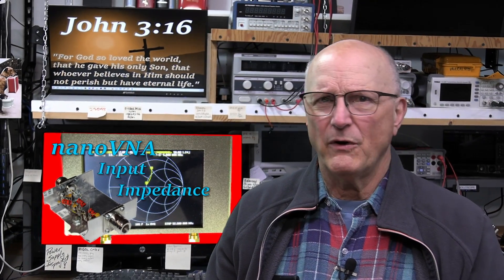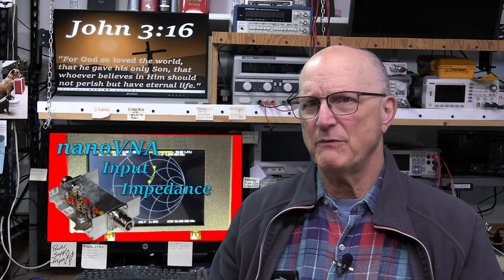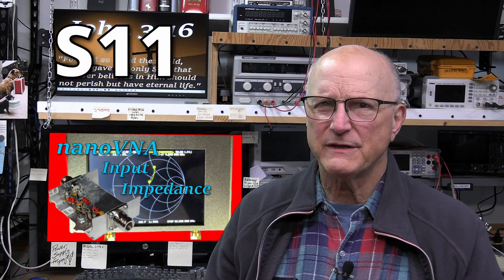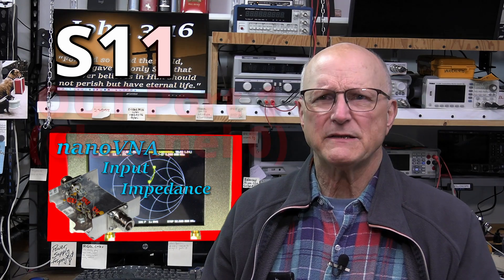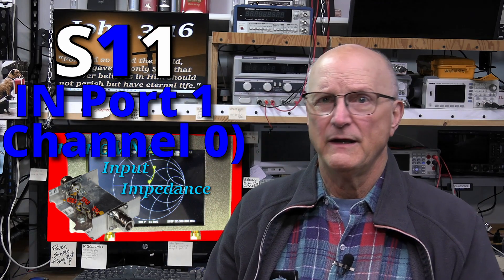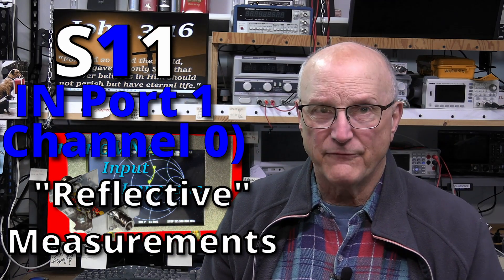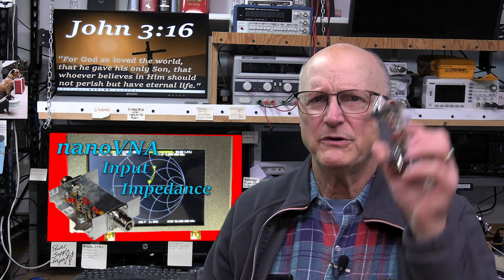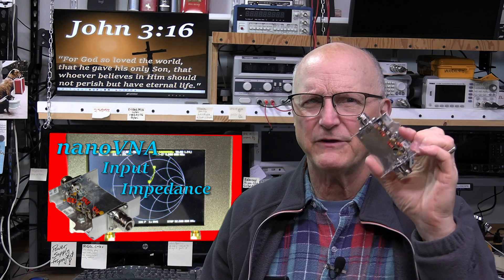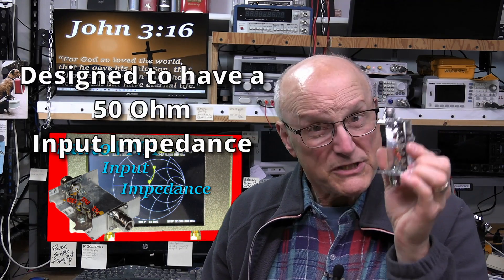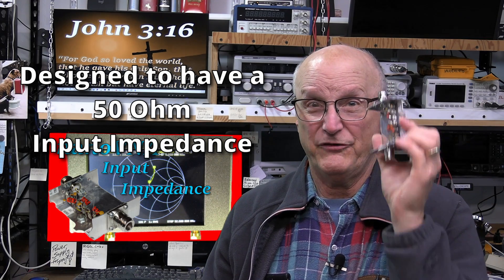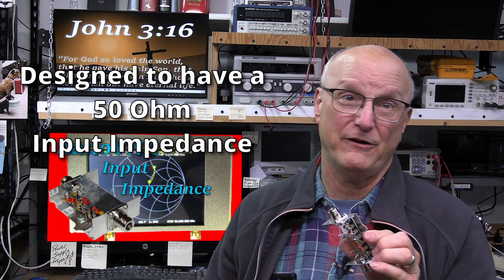In this video, I'm going to continue the process of doing measurements with just one port. This is called S1,1 measurements in the world of VNAs because the signal goes out port 1 and is measured on port 1. These are all reflective measurements. We are going to measure the input impedance of this lovely 50 MHz bandpass filter that I threw together. It's supposed to have a 50 ohm input impedance, so we'll see what it really is in the process of this video.